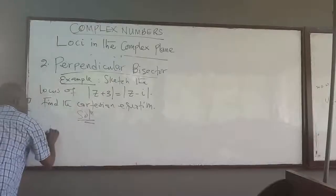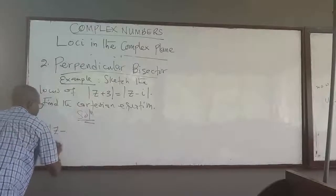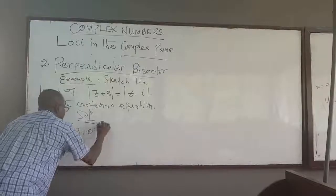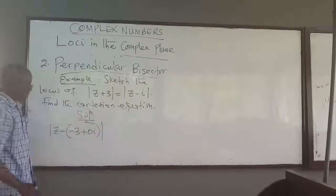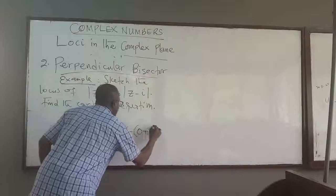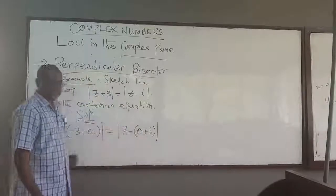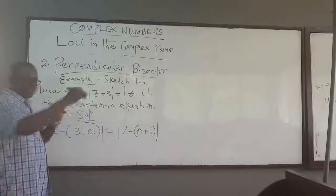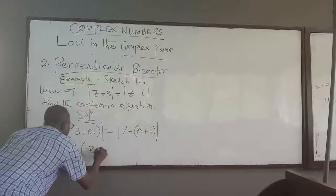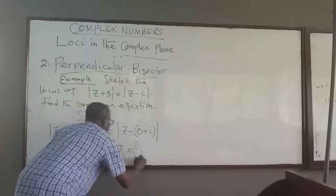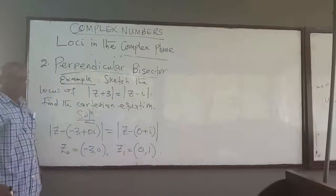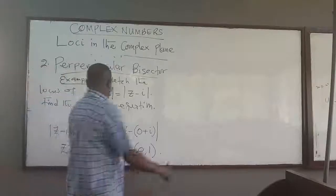What are those two points? To get those, you have to rewrite this equation in the standard way: z minus — the complex number can be written as negative 3 plus 0i. Minus minus will give you a plus 0i, and that is equal to z minus, which gives you 0 plus i. So that is the same. Once you write it in this form, you get two points: z naught would be at the point negative 3 and 0, and the other point z₁ would be at 0 and 1.